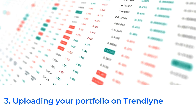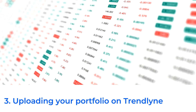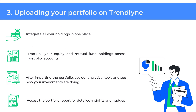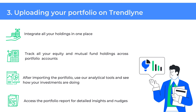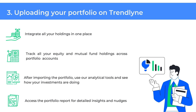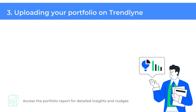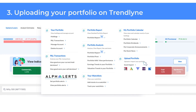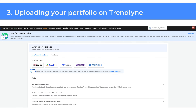Let's now move on to Trendline's portfolio tool. This tool enables you to track all your equity and mutual fund holdings across multiple portfolio accounts in one place. Once you've imported your portfolio, you can use analytical tools to review the performance of your investments and get a detailed customized portfolio report. This report includes detailed analytics with sections dedicated to your portfolio's score, performance, diversification, risk analysis and more. There are several methods available: linking your portfolio from your broker account, using the Excel import feature, or manually adding stocks via the add stock option.